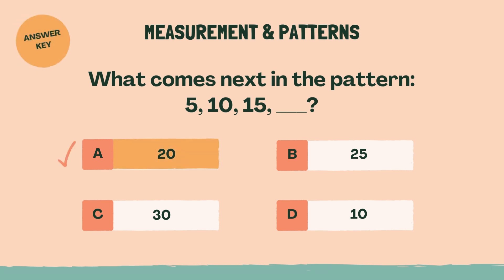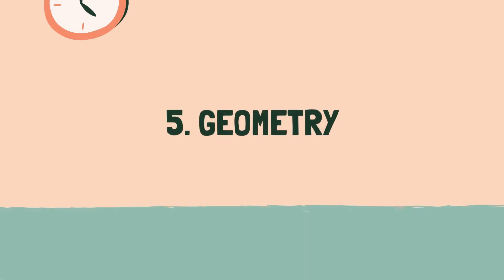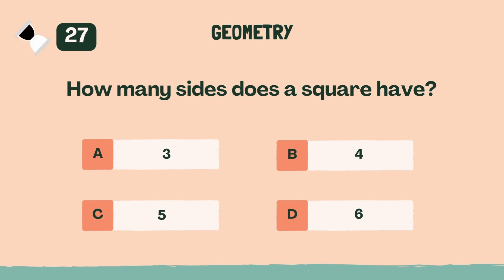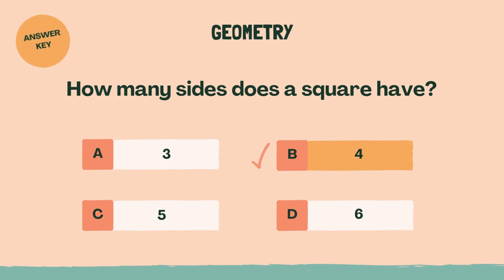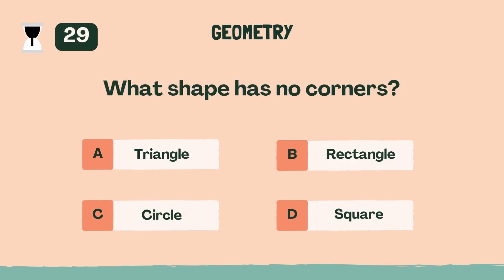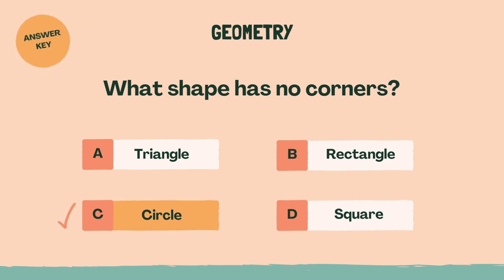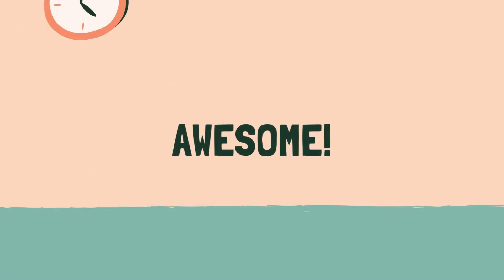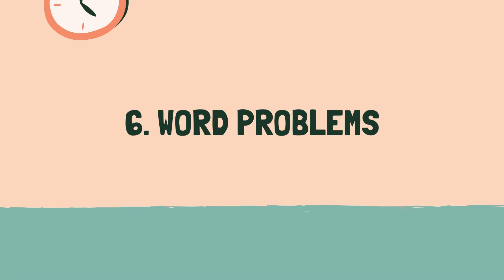Well done, let's move on to the next category. Category 5: Geometry. 3, 2, 1, go. How many sides does a square have? B, 4. How many sides does an octagon have? C, 8. What shape has no corners? C, circle. Awesome, last category coming up.